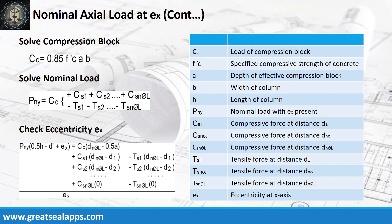Continuing at the x-axis, solve the force of the compression block and sum up all the steel forces together with the compression block to get the nominal load of the column section. Perform a final check of eccentricity from the given computations.